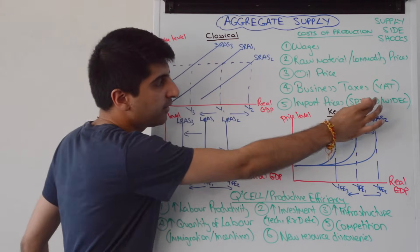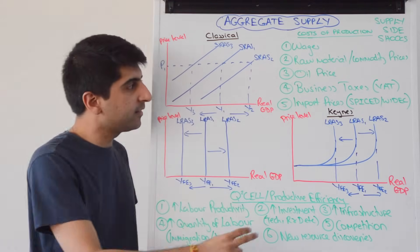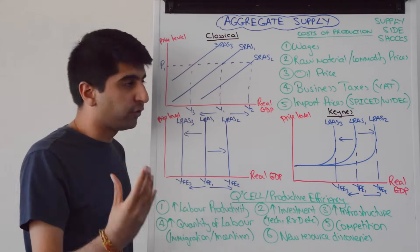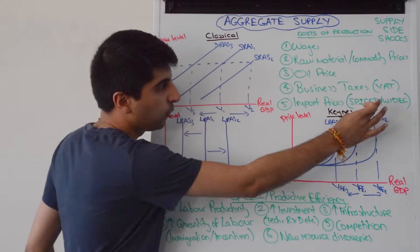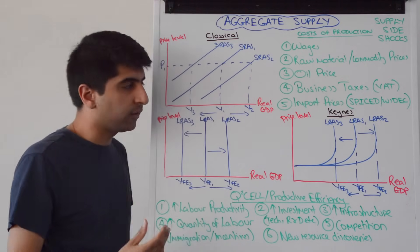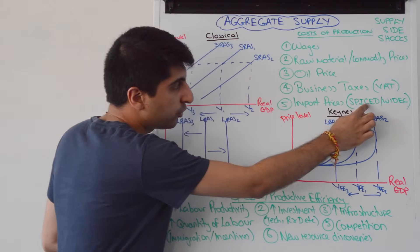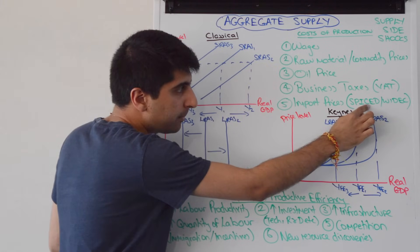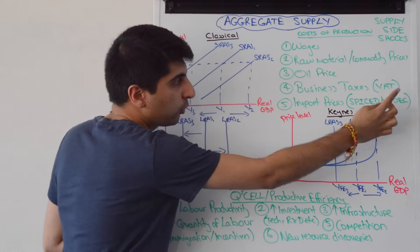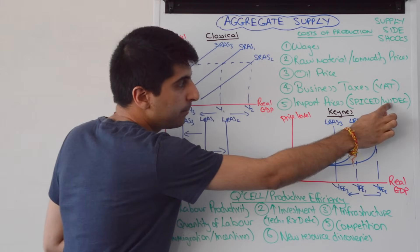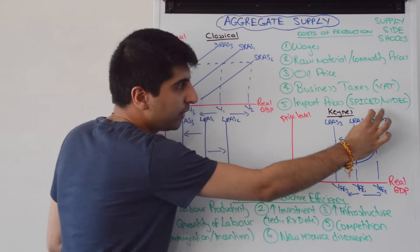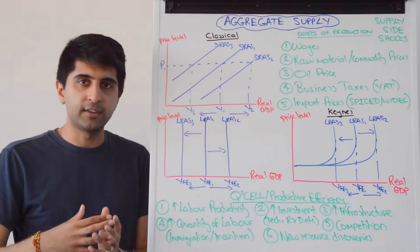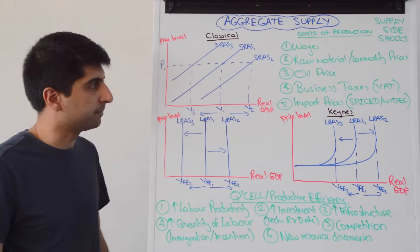Remember the memory devices SPICED and WDEC: SPICED is for a strong exchange rate, WDEC is for a weak exchange rate. Strong pound — imports cheap, exports dear. Weak pound — imports dear. So there's the link to import prices and the link to SRAS and costs of production.